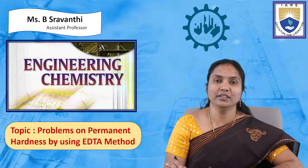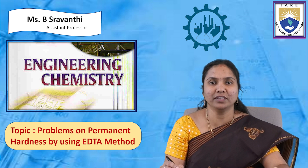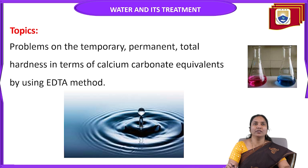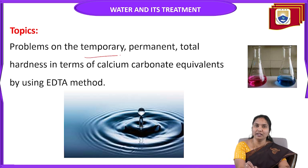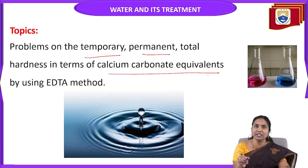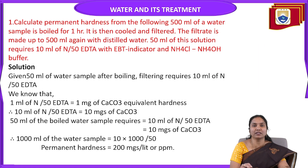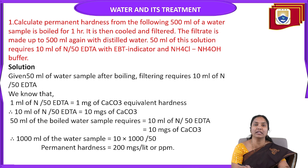Hello everyone, this is Shnavanti working as assistant professor, department of chemistry, in the Institute of Aeronautical Engineering. Today we are going to discuss problems on temporary, permanent, and total hardness in terms of calcium carbonate equivalent by using the EDTA method. In previous classes we already discussed what is the EDTA method and how to estimate hardness of water. Now we will discuss numericals based on this EDTA method — how to estimate temporary hardness, permanent hardness, and total hardness.